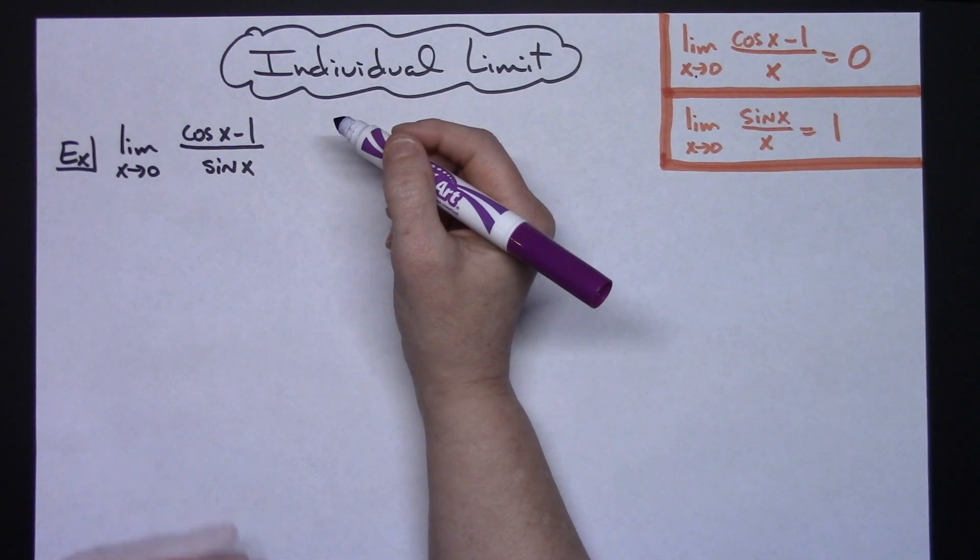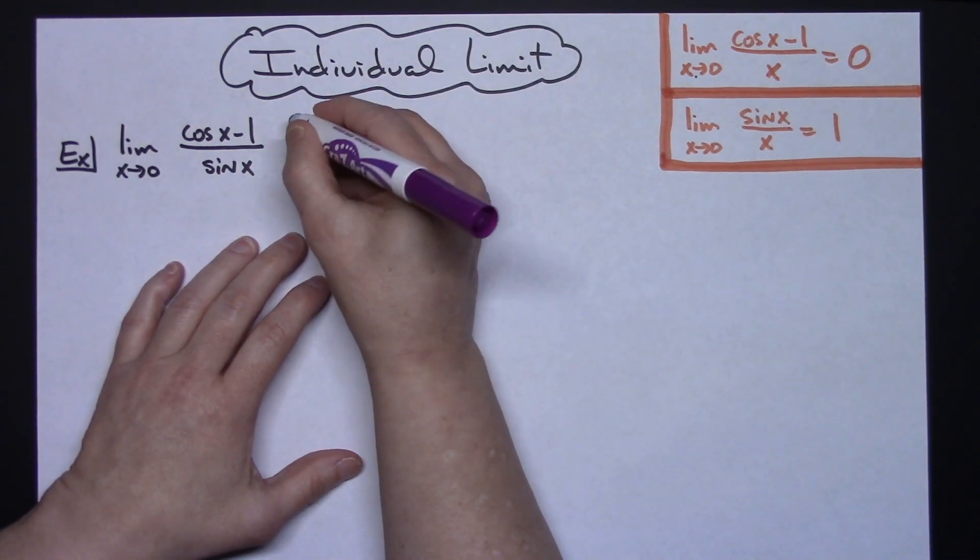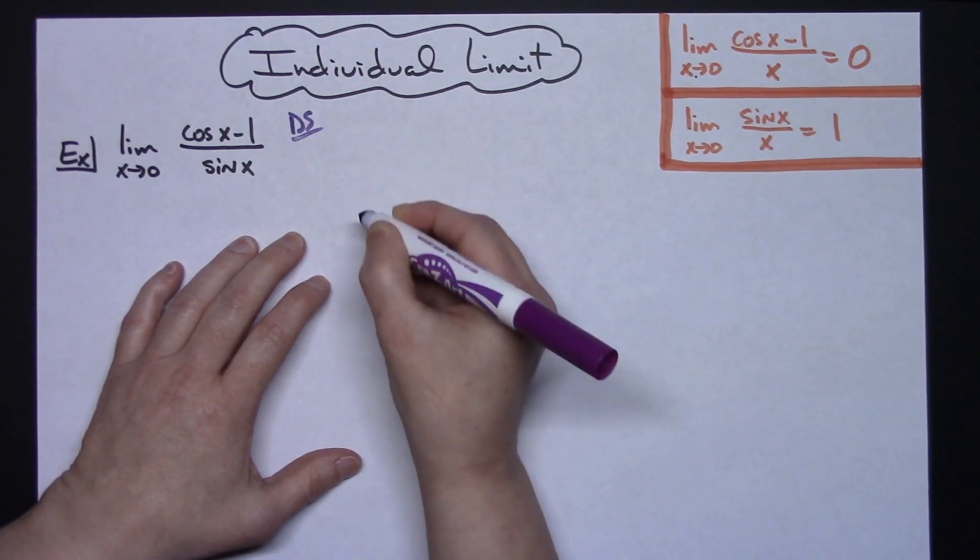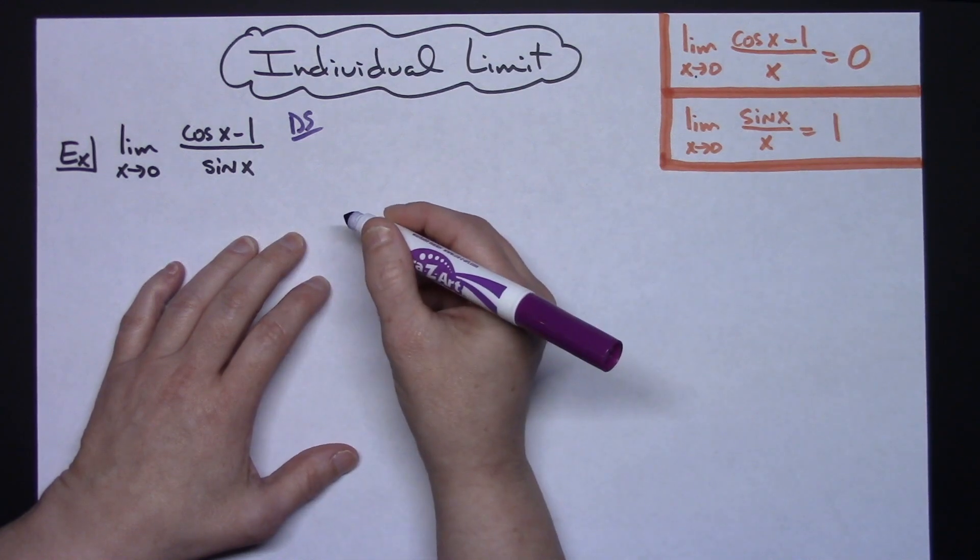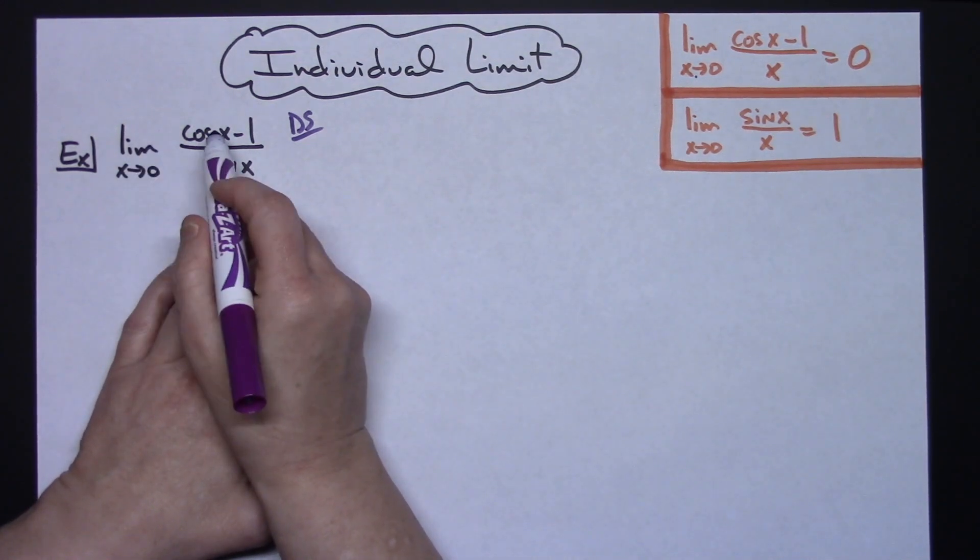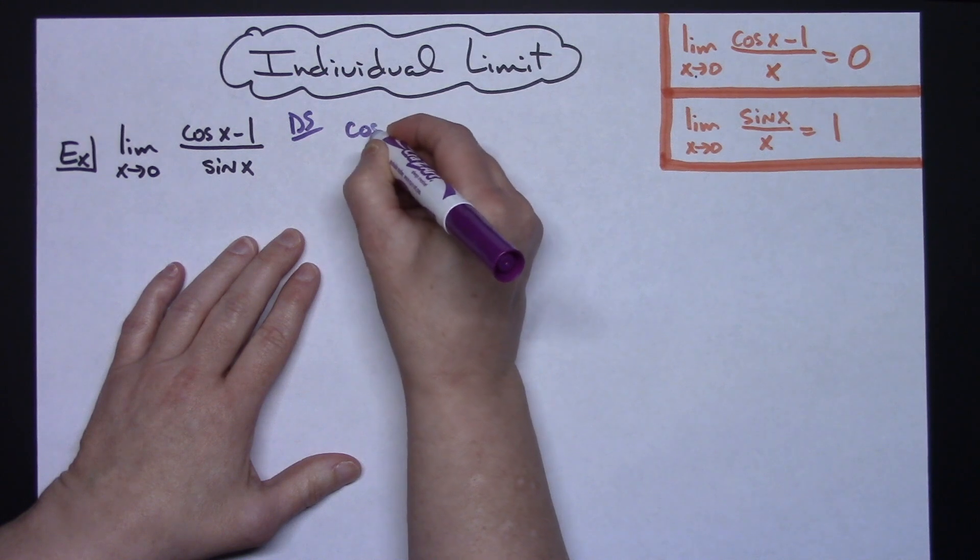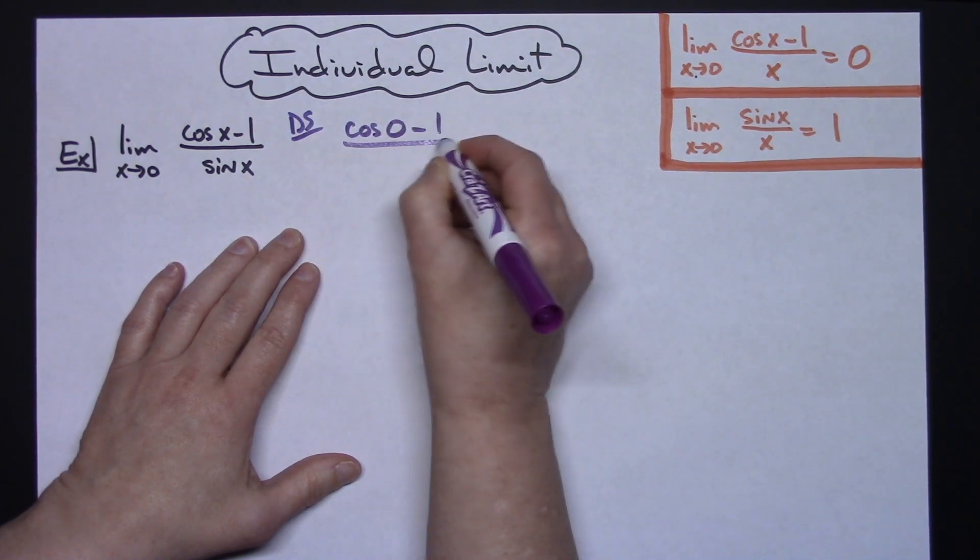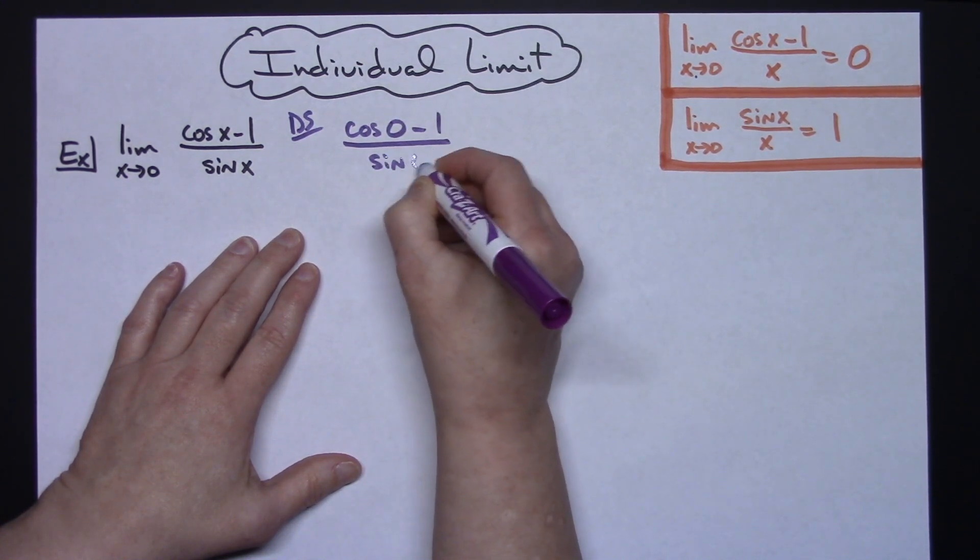As with any limit problem, you should start with a direct substitution, plugging in to make sure that you really do have an indeterminate form. So I'm going to plug zero in, so I'll have cosine of 0 minus 1, all over the sine of 0.